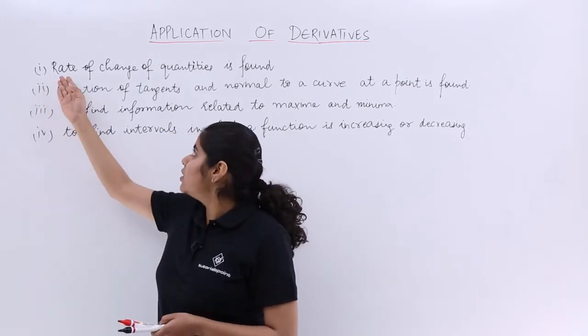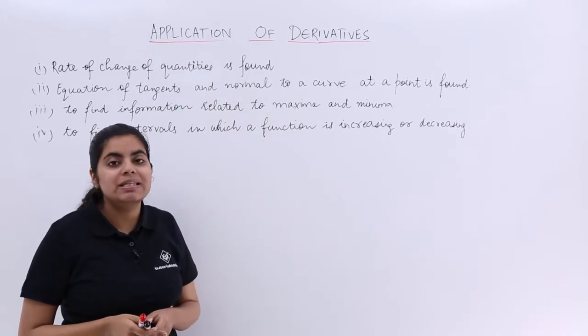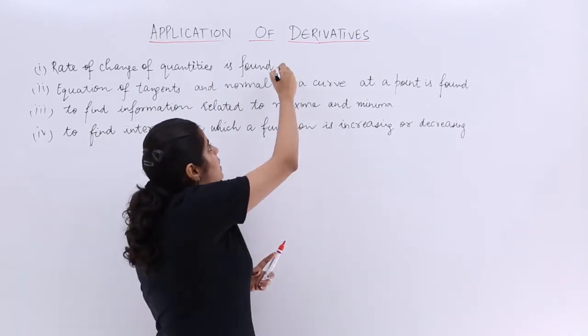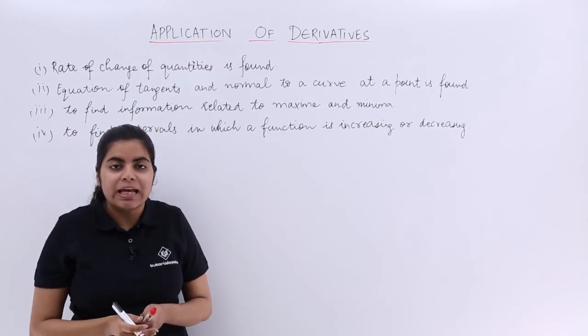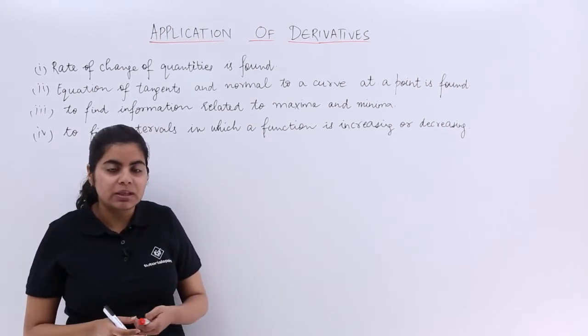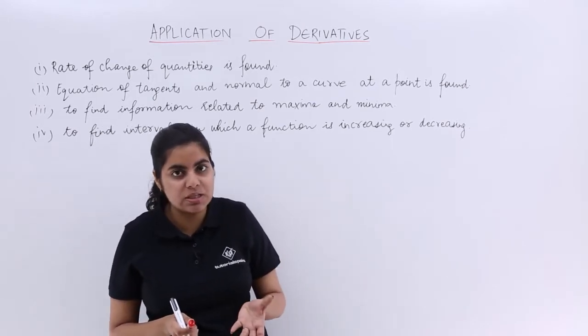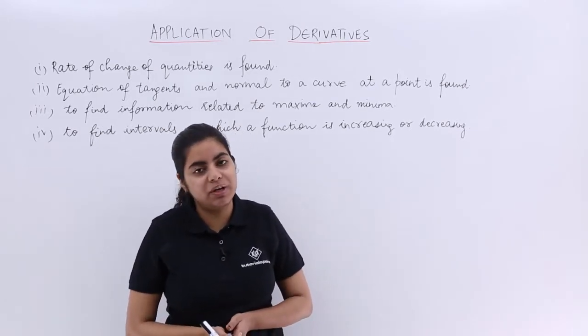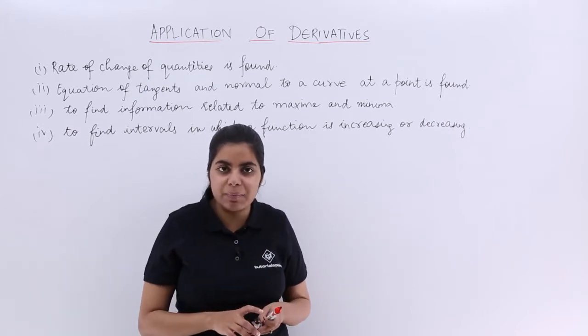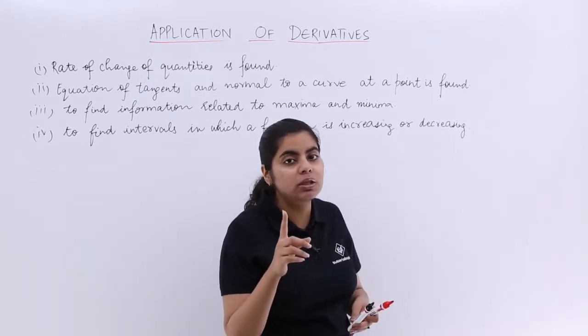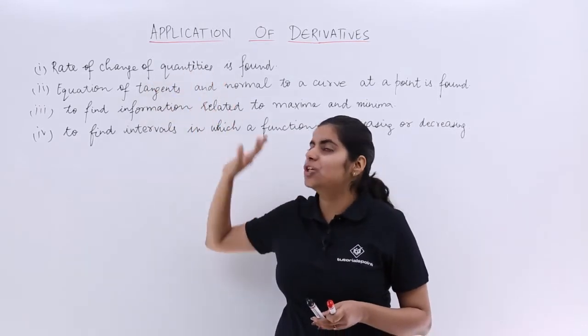So let's talk about the first application: rate of change of quantities is found. It says that with the help of derivatives we can easily find out the rate of change of quantities. In order to understand more, the next videos will be concentrated on some questions which will be using the concept of rate of change of quantities only. The first application which is also the basis of application of derivatives is regarding the rate of change of quantities.